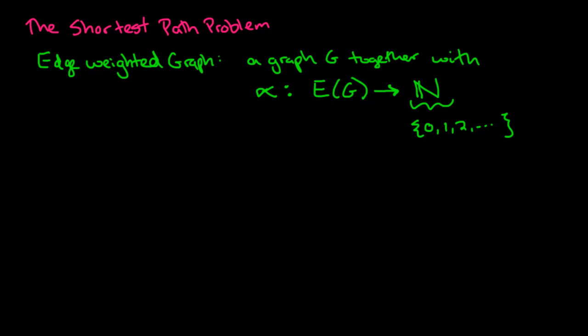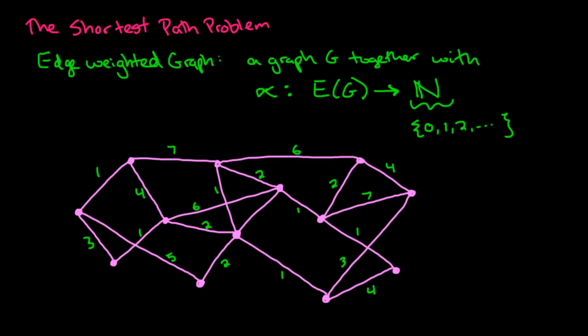I've prepared a drawing of an example. Here we have it. So we can see that this is a graph on quite a few vertices. And what's happened now is that every one of the edges of the graph has been assigned with one of these numbers, one of these natural numbers. So for example, this edge right here we would say has weight 7.